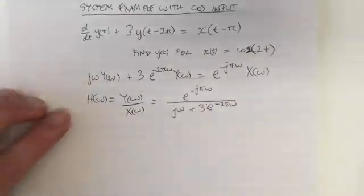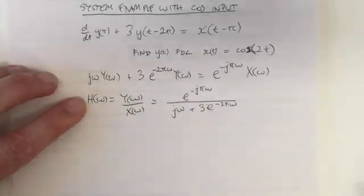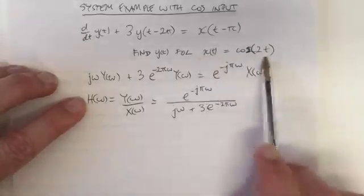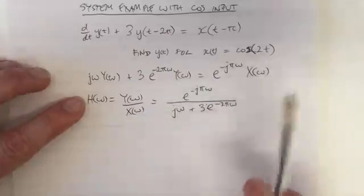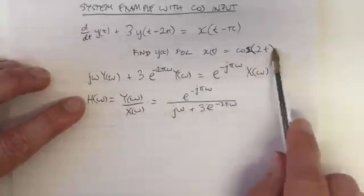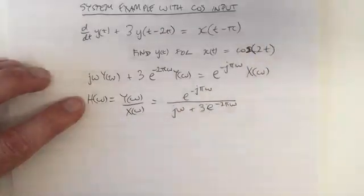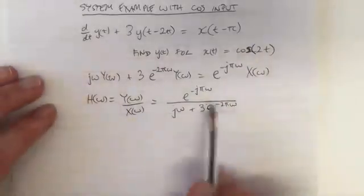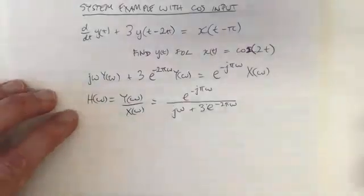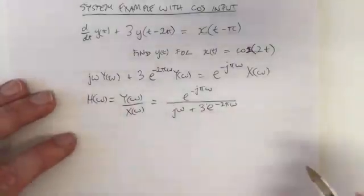So this is the transfer function — the impulse response in the frequency domain. Now we ask: what if the input was cos(2t)? One thing you could do is use the knowledge that for a linear time-invariant system with a single frequency input, omega equals 2 is the only value, and you could just work out the amplitude and phase for omega equals 2. But let's work out the full equation to confirm and prove it to ourselves.